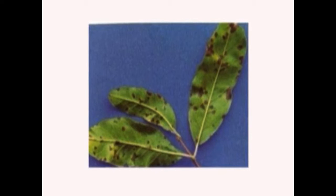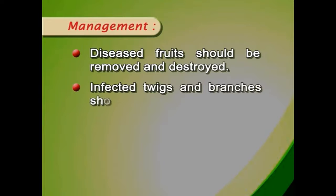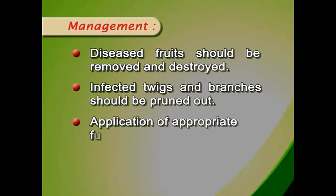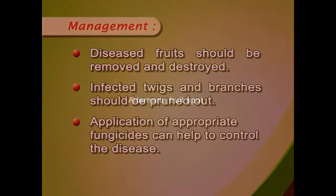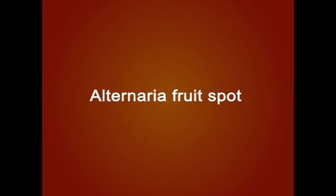Infection may cause plant death. Disease emergence is favored by rainfall and water-saturated soil. For management, diseased fruits should be removed and destroyed, infected twigs and branches should be pruned out, and application of appropriate fungicide can help to control the disease.